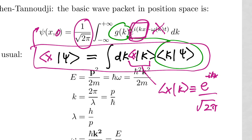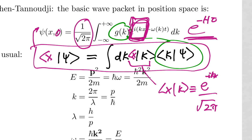Then we add back the time dependence simply by multiplying by e^{-iωt}. That's the conversion from time-independent to time-dependent when dealing with stationary states — these e^{ikx} terms are stationary states. So the prescription is to apply e^{-iĤt/ℏ}, which gives ω(k). Understanding how to go from time-independent to time-dependent for stationary states is elementary quantum mechanics.